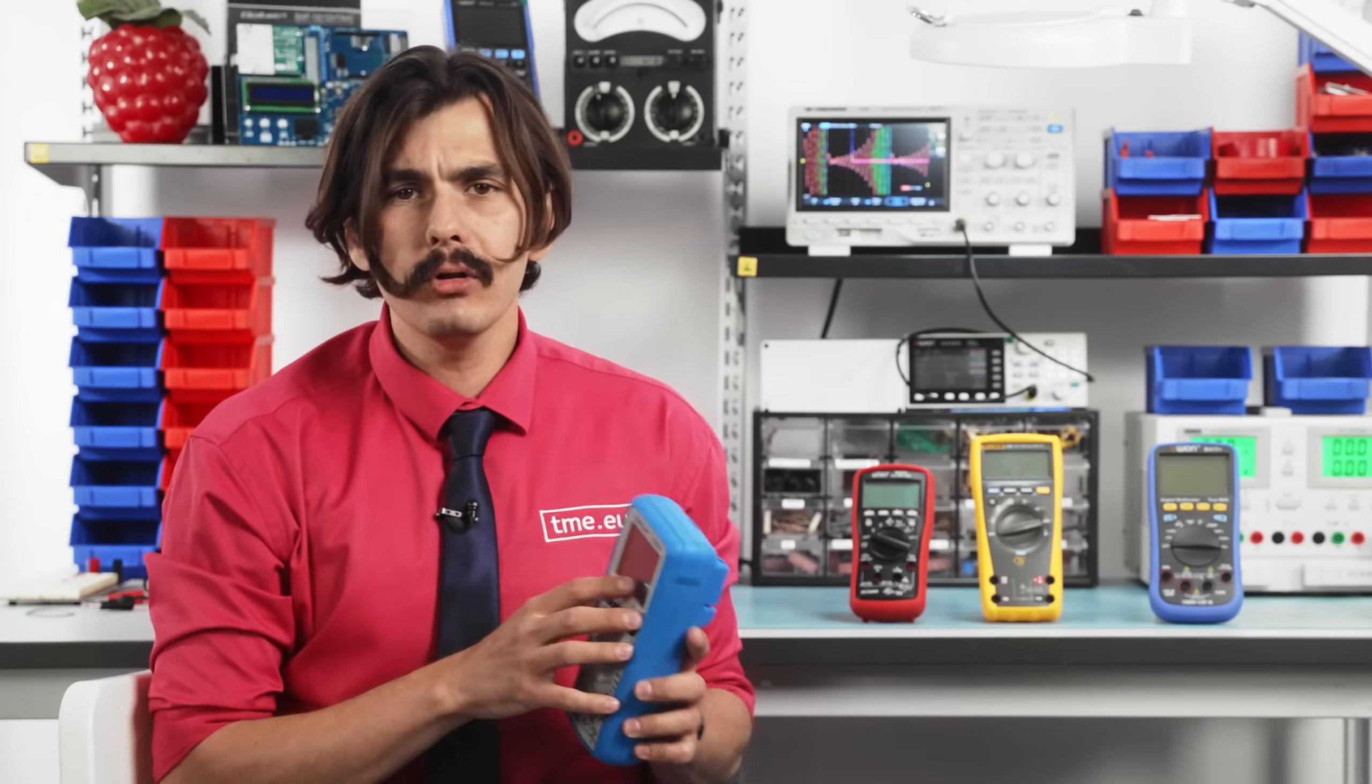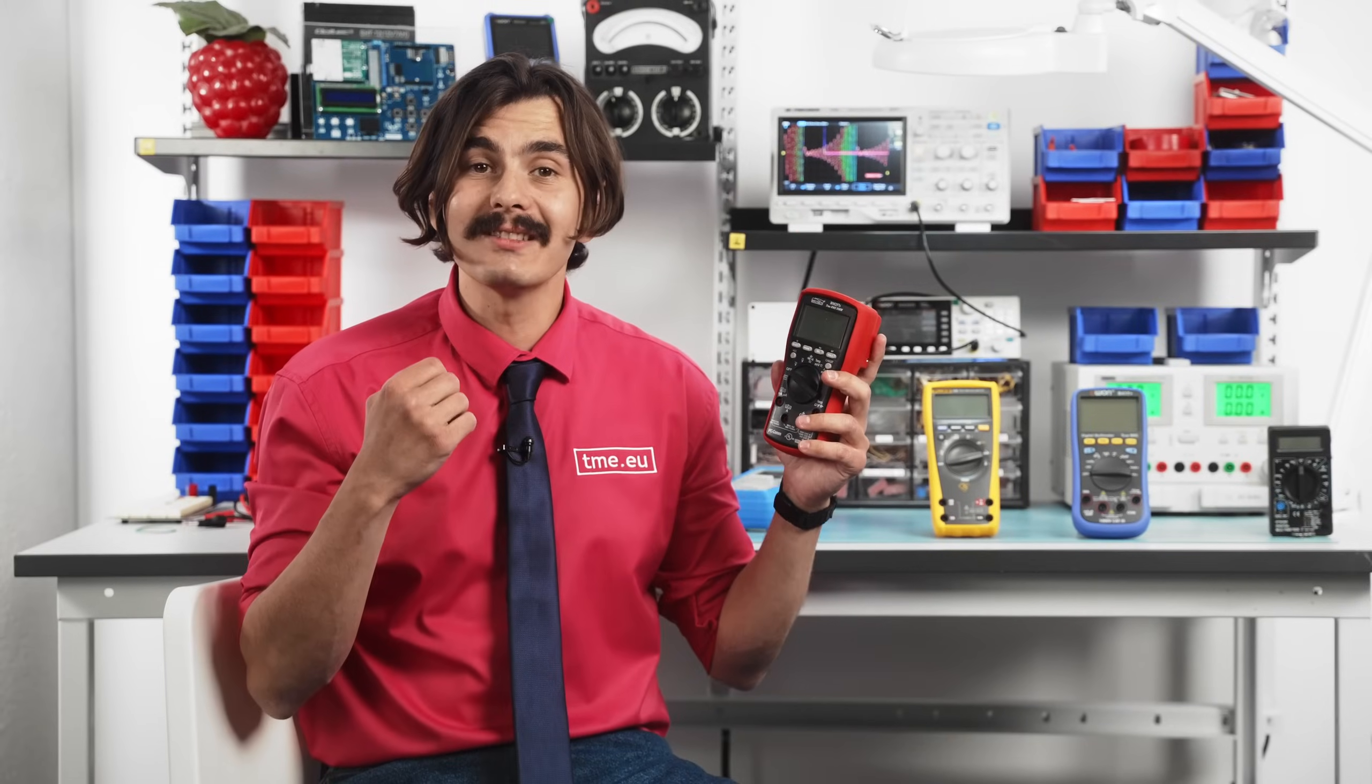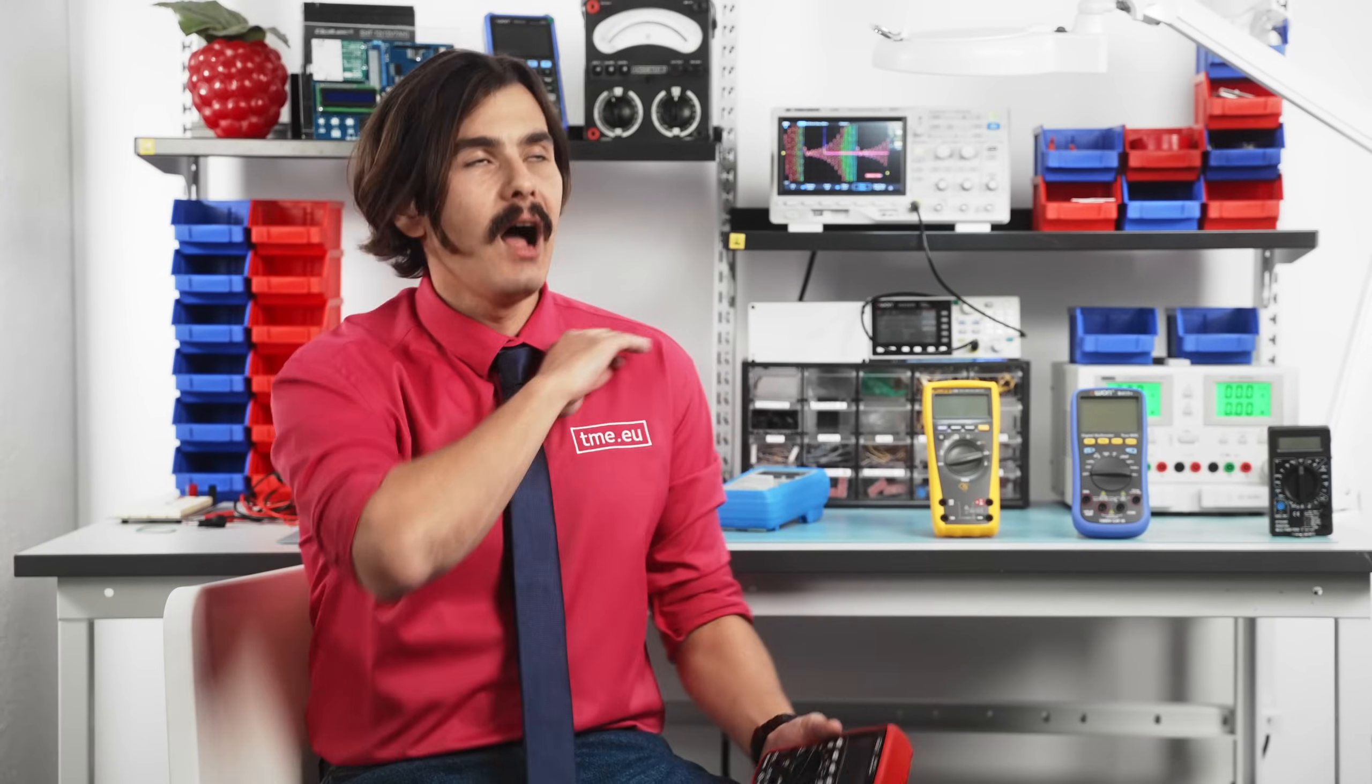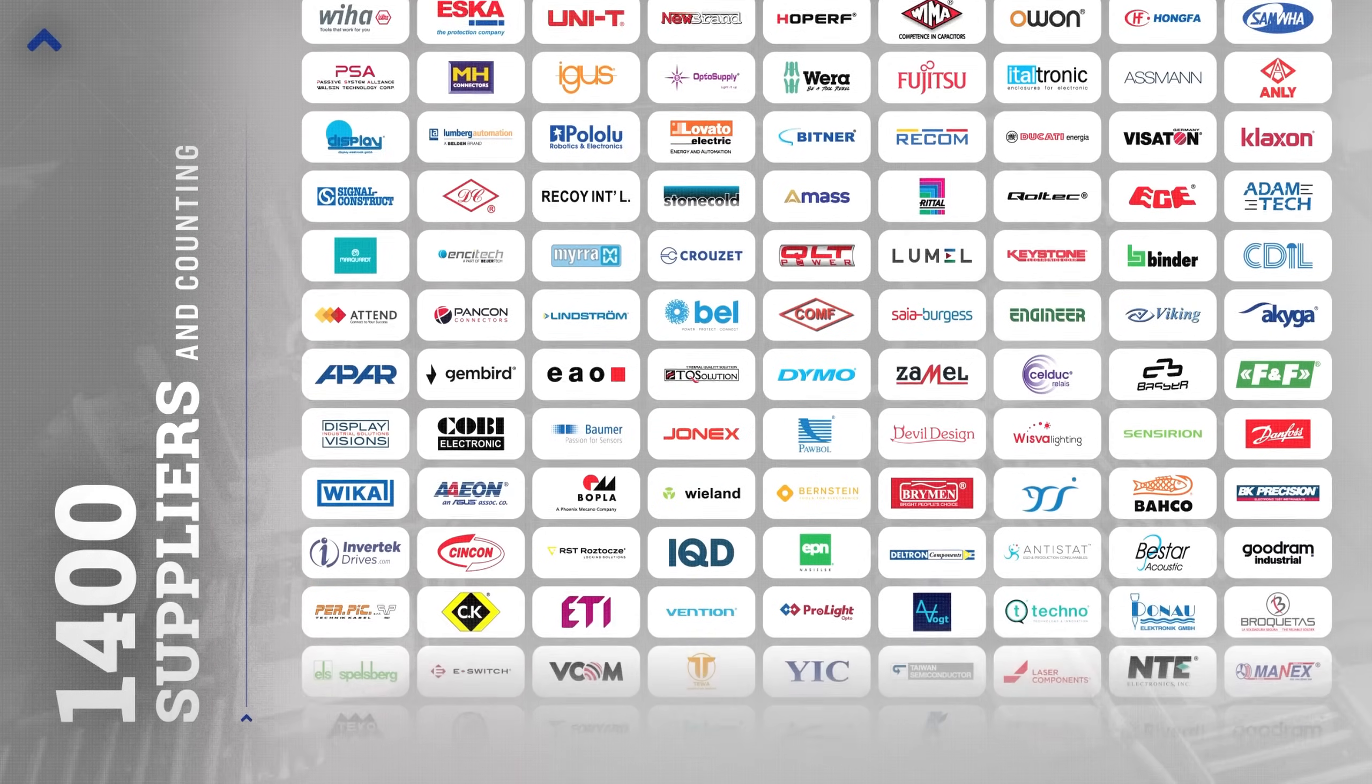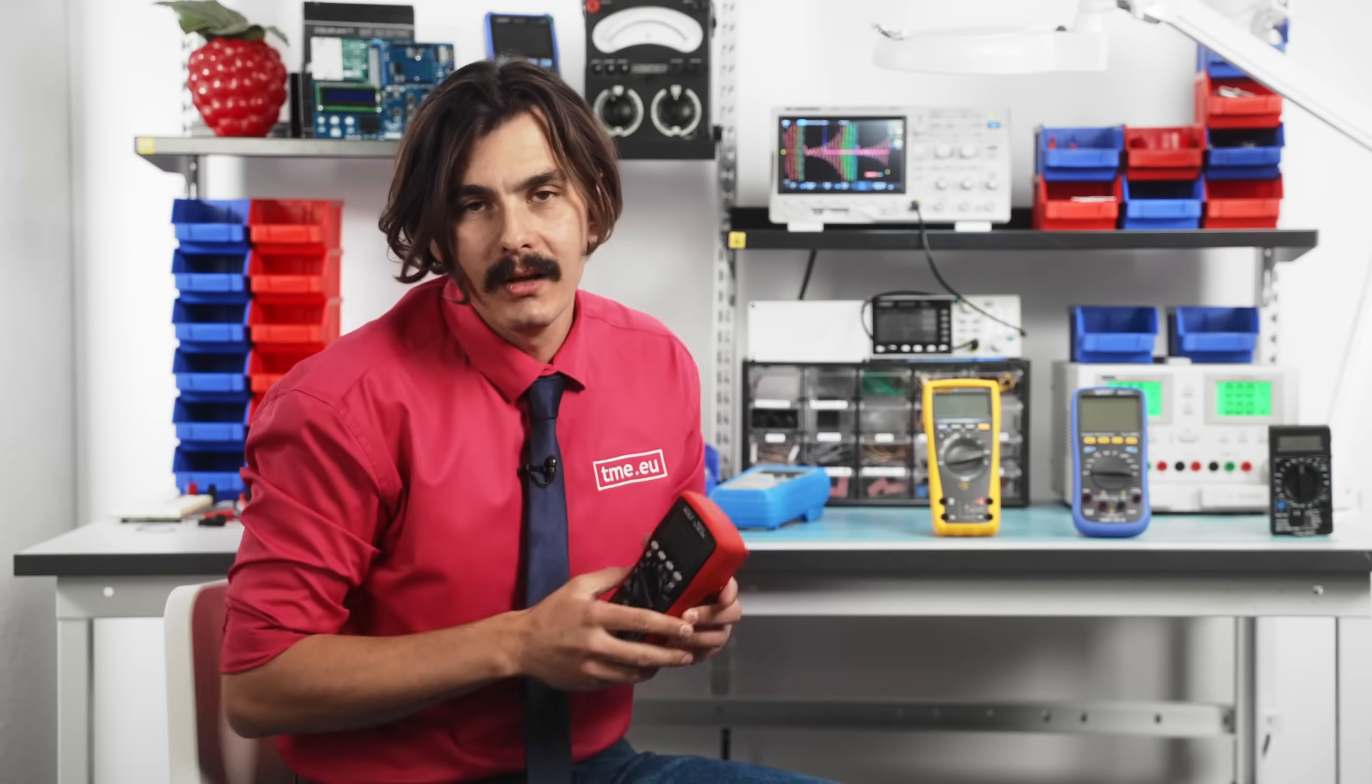Fortunately, many modern multimeters like this Bryman one here come with both automatic and manual range modes. You can explore more options at TME.EU. We have a lot of multimeters there. At TME you will find hundreds of thousands of products with trusted brands like Bryman, Fluke, Owon, and PICTEC. And if you order right now, probably your order will be fulfilled in less than 24 hours, because 96% of orders are fulfilled the same day. So check it out.